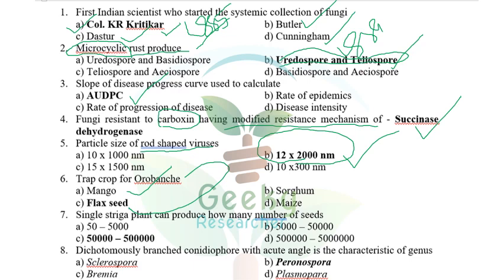The next question: a single Striga plant can produce how many seeds? Striga is an example of a partial root parasite, and it can produce 50,000 to phylax seeds.